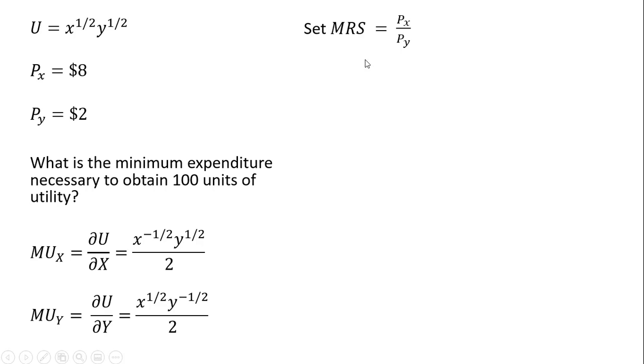We're going to set the marginal rate of substitution equal to the ratio of the price of good x to the price of good y, just the utility maximizing condition. The marginal rate of substitution is the marginal utility of good x divided by the marginal utility of good y, so I got that result right here on the left-hand side, and we're just going to simplify the left-hand side and the right-hand side.